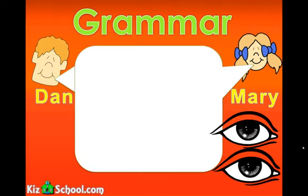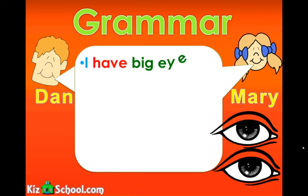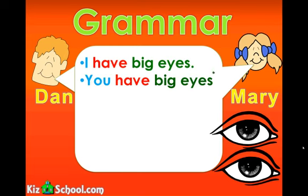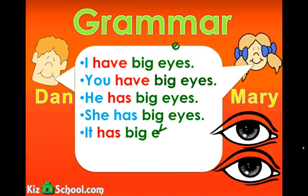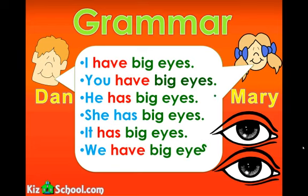Big eyes. Grammar. I have big eyes. You have big eyes. He has big eyes. She has big eyes. It has big eyes. We have big eyes.